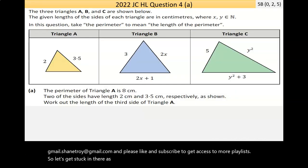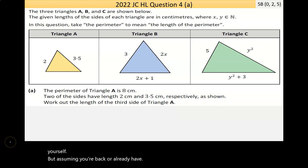As always, I suggest pausing the video and having a go yourself. But assuming you're back or already have, let's give a read through to part A. So it says here that the three triangles A, I see here triangle A doesn't look right angled. We're missing a side down here and we've given no angles.